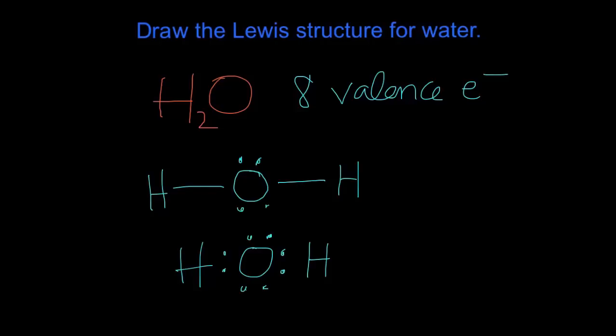We can add the remaining four electrons by putting in lone pairs on the oxygen. Now everything in water is satisfied because oxygen has a complete octet, and hydrogen doesn't follow the octet rule the same way since it only needs two electrons to have a full sublevel.